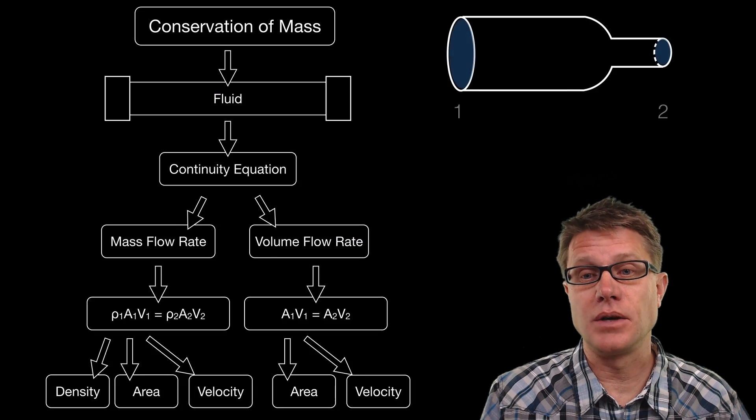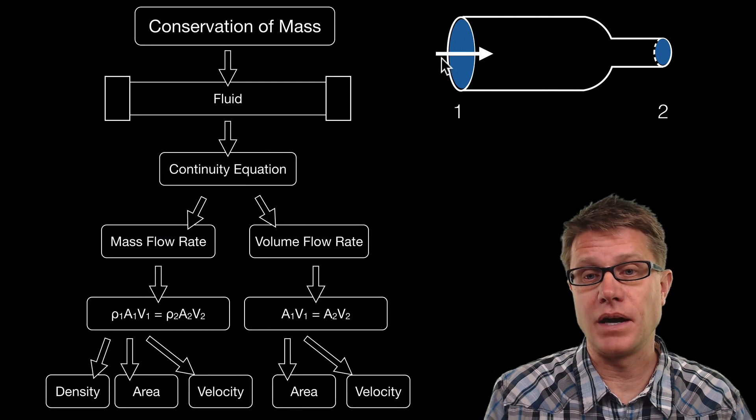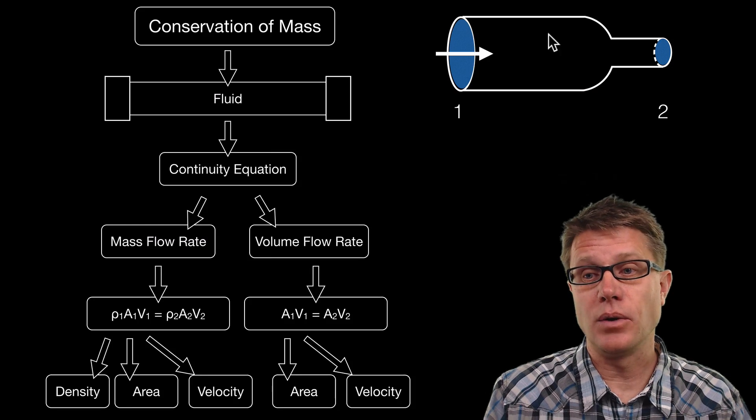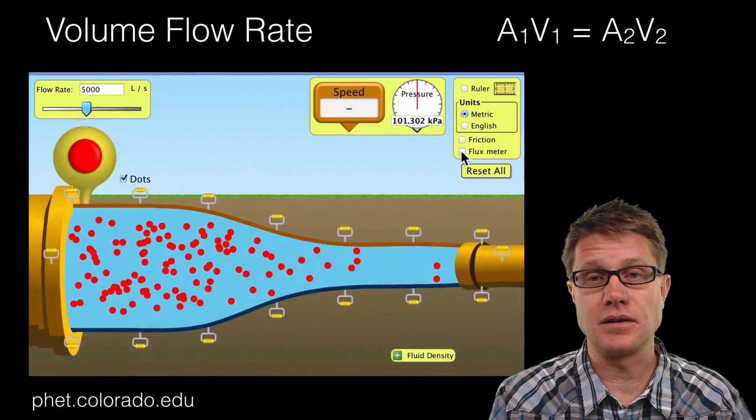And so an example of that. Let us say we have a cross-sectional area that is very large right here and a low velocity. What happens as we decrease the cross-sectional area? We should see an increase in the velocity.